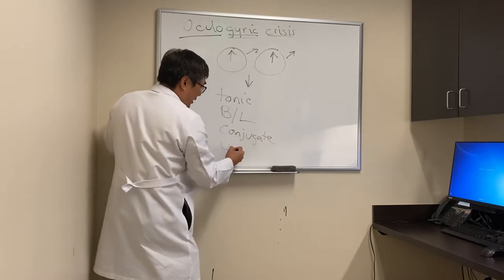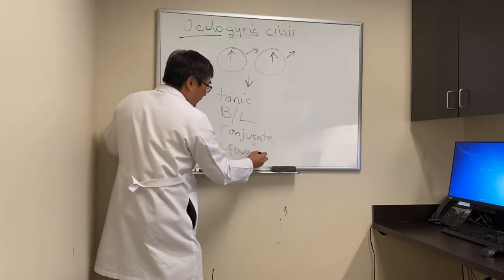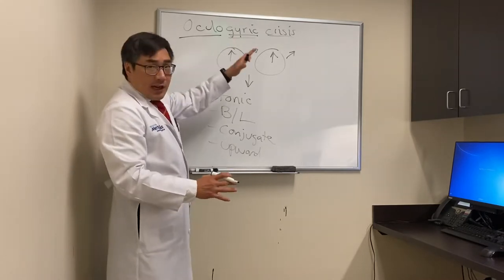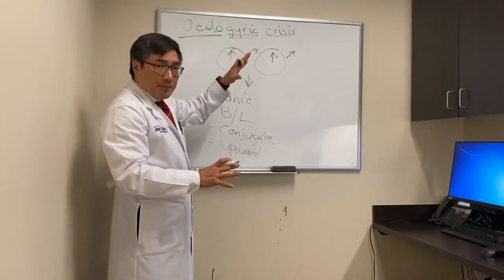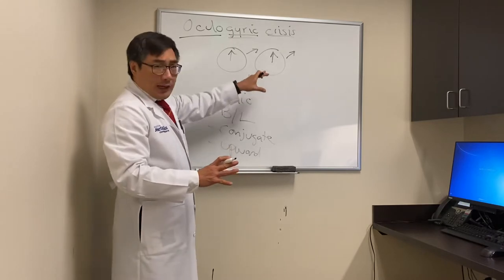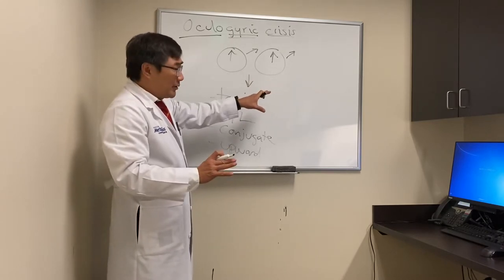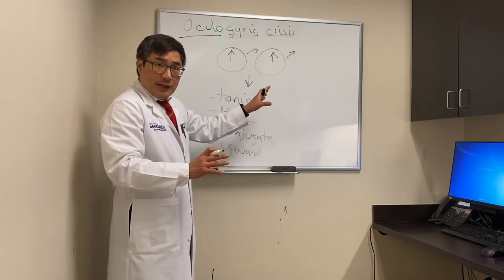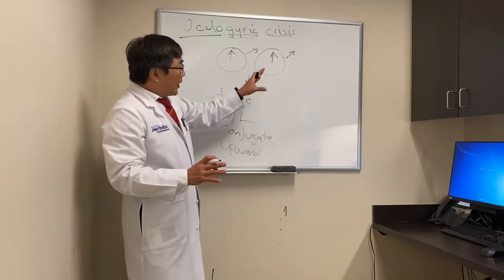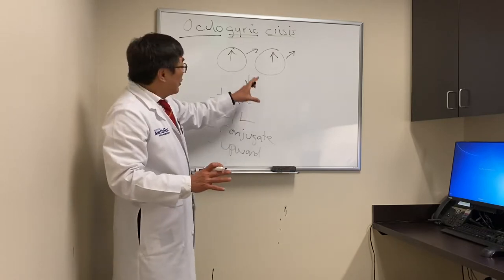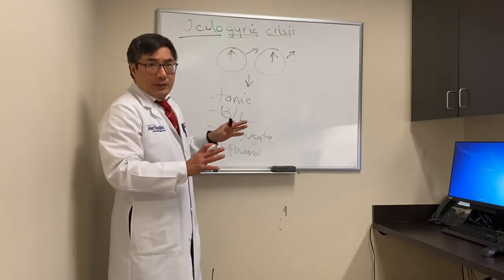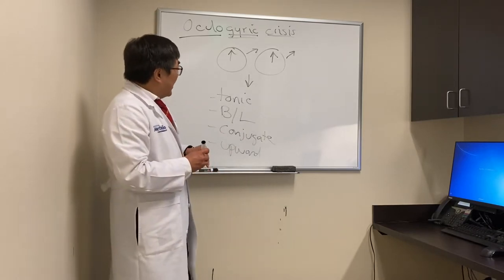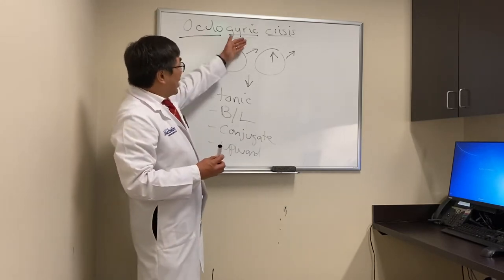It's usually upward. Oculogyric crisis can be a dystonic reaction after medicines, including neuroleptics of various types, but also things an ophthalmologist might see like metoclopramide, which is used for nausea and vomiting. Other medicines can cause it, and so if you see it, you should be looking up the list and make sure your patient hasn't been exposed to one of these medicines.